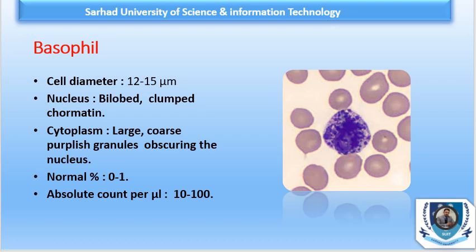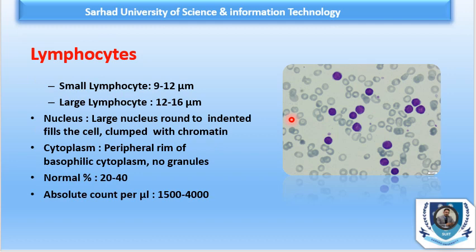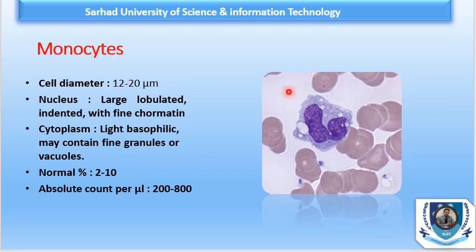Lymphocytes are of different types in peripheral blood: small lymphocytes are 9 to 12 microns and are more prominently present, while large lymphocytes are 12 to 16 microns. They have a large, round to indented nucleus that fills the cell, with clumped chromatin. The cytoplasm is a peripheral rim of basophilic cytoplasm with no granules. Normal count is 20 to 40 percent DLC and an absolute count of 1500 to 4000 per microlitre.